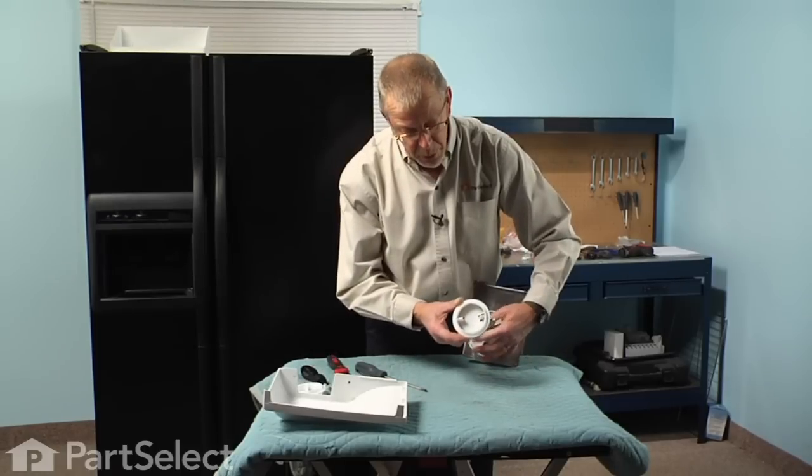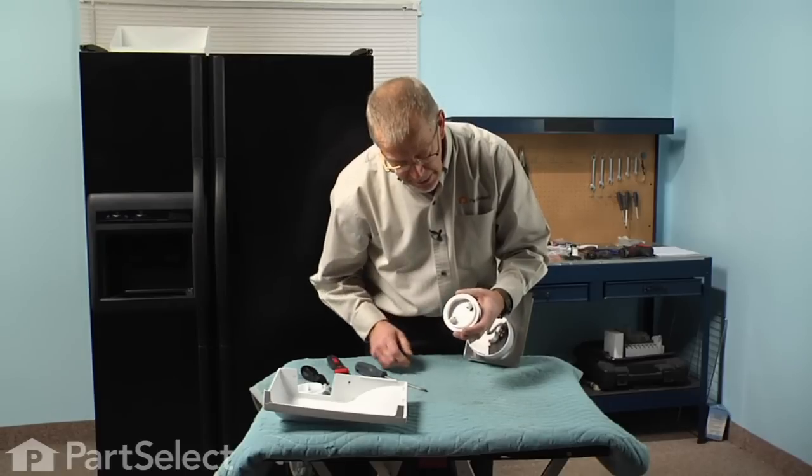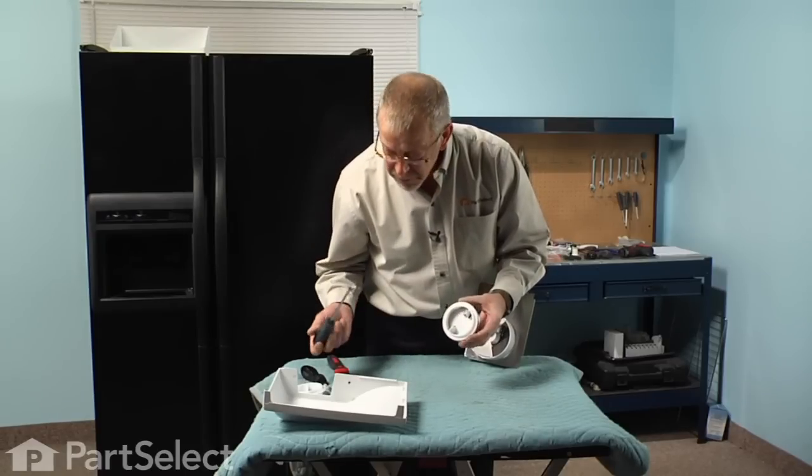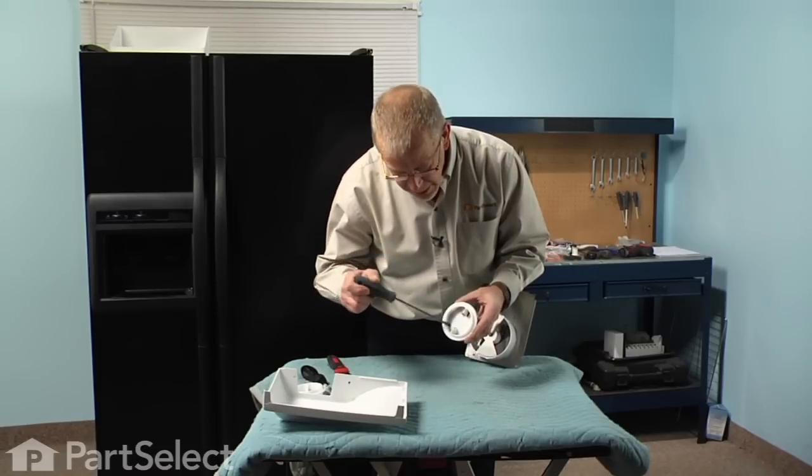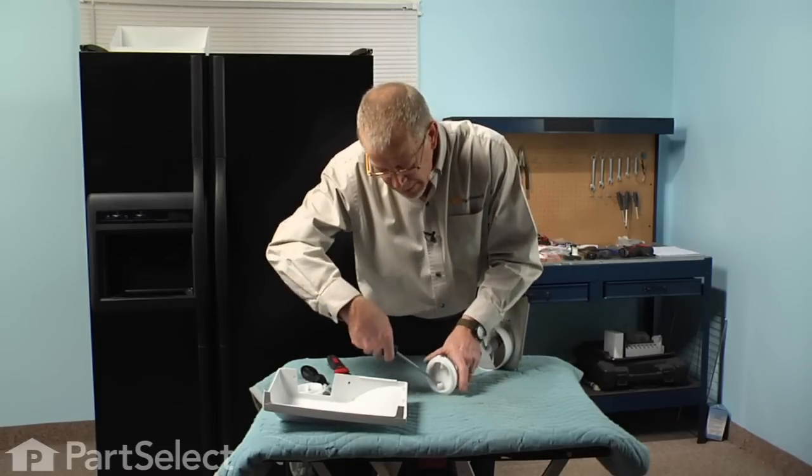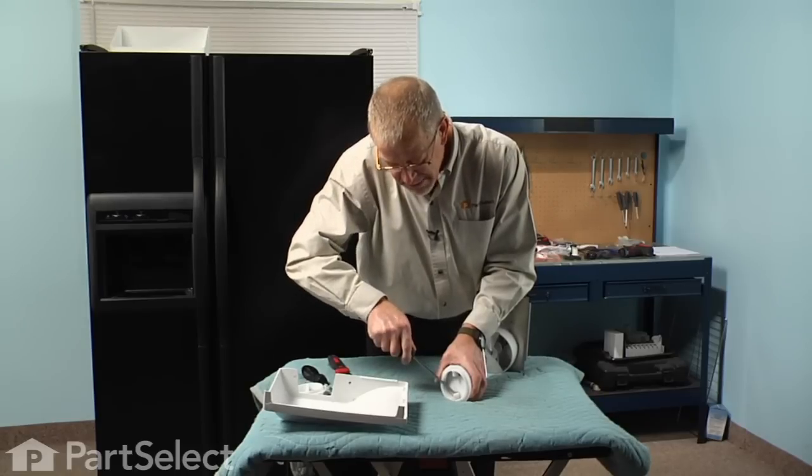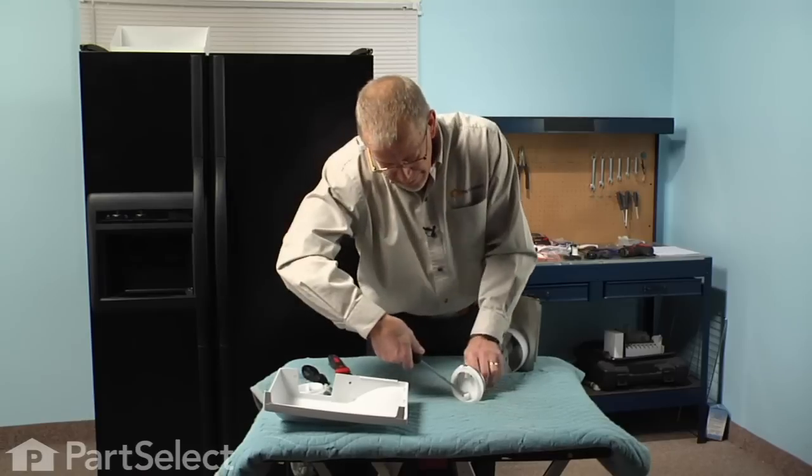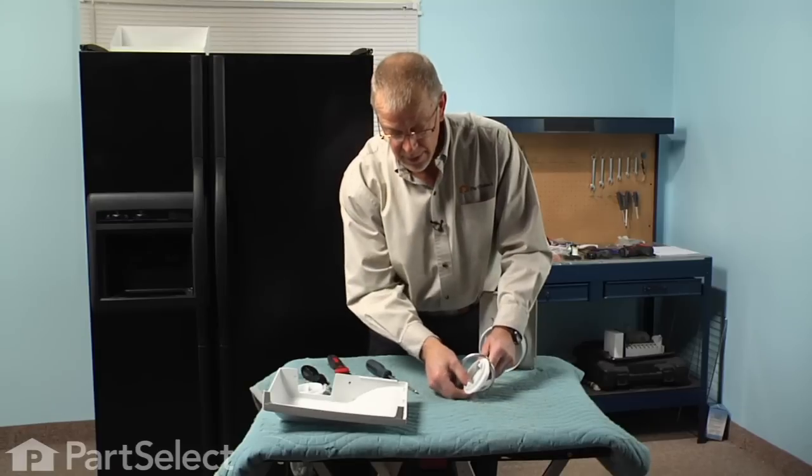Once we have that auger assembly pulled out of the bin, the easiest method we found to remove the end cap is to insert a flat blade screwdriver into the opening opposite the end of the auger hook, and we're just going to pry outward and twist at the same time, and that should pop out.